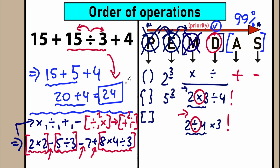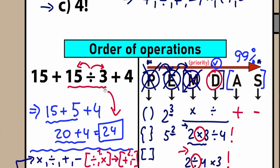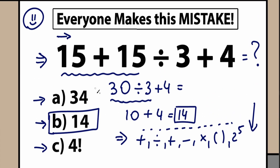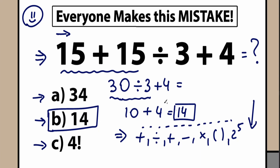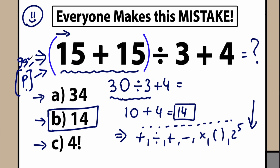That's why the correct answer is 24. Let's look at the beginning: we said the answer looks like 14. From left to right, 15 plus 15 gives 30. That is correct only when we have parentheses around 15 plus 15. With parentheses, parentheses have the highest priority — letter P — so we evaluate inside first to get 30, then division gives us the result. With parentheses, the correct answer is 14. Without parentheses, that's not how it works.